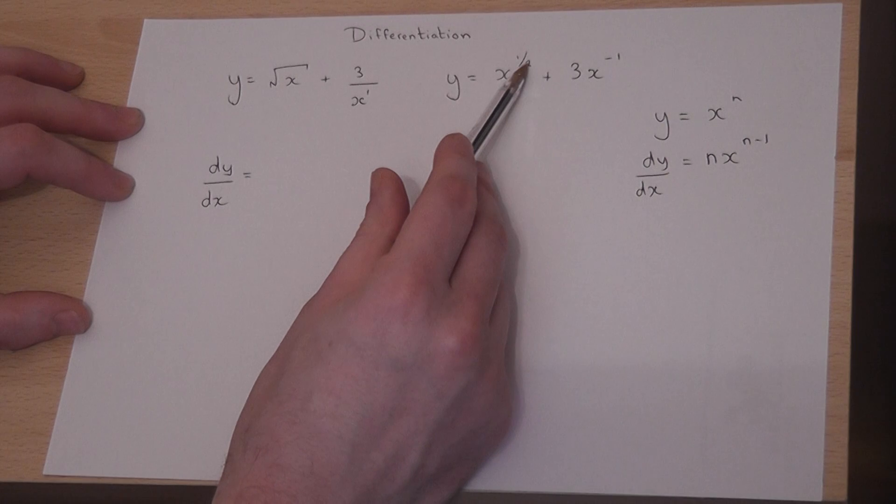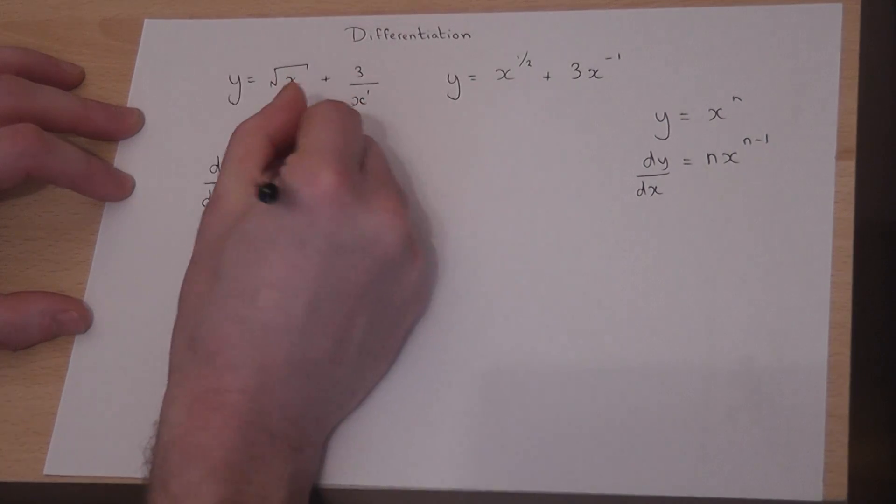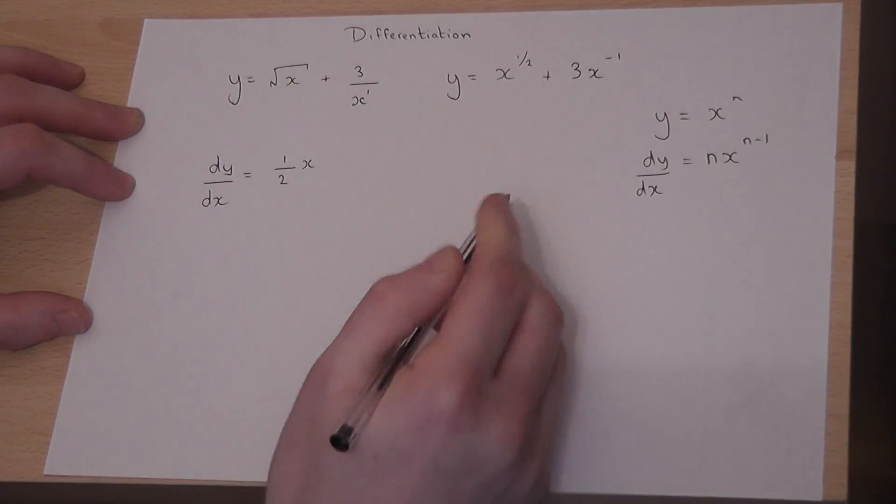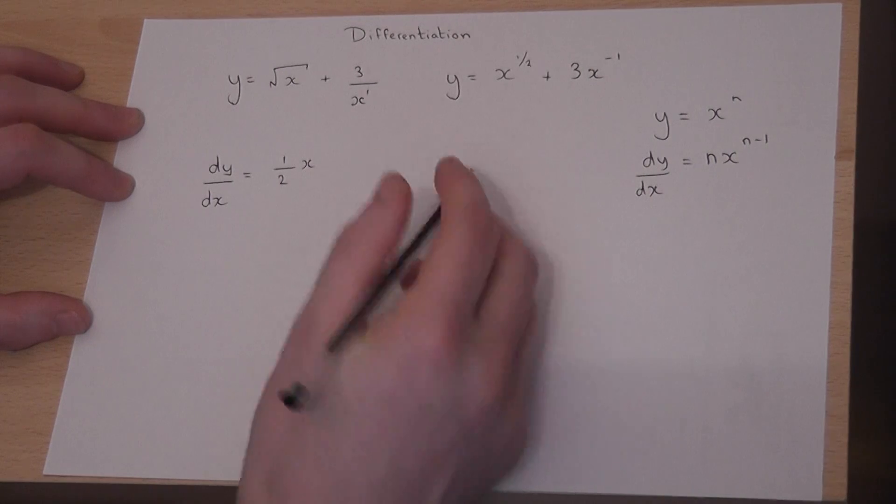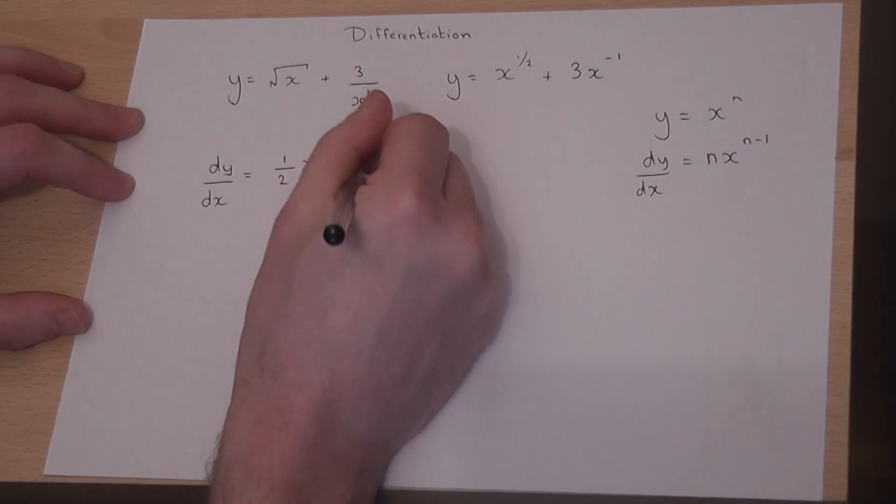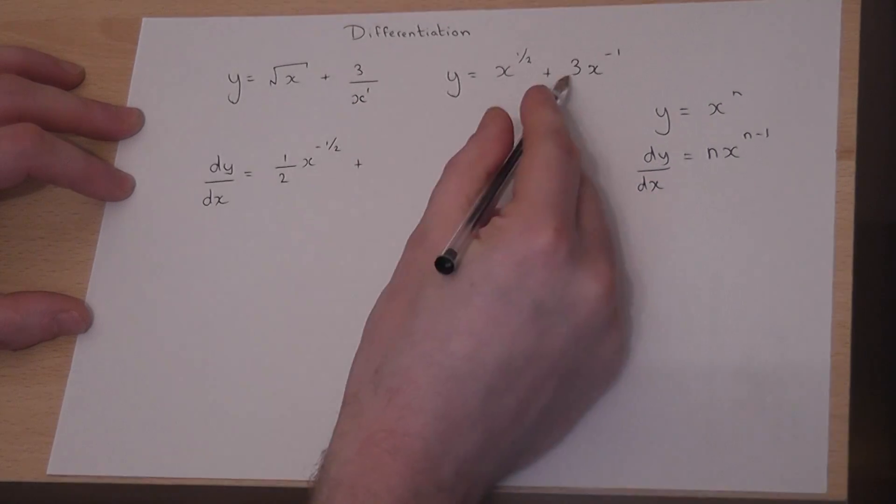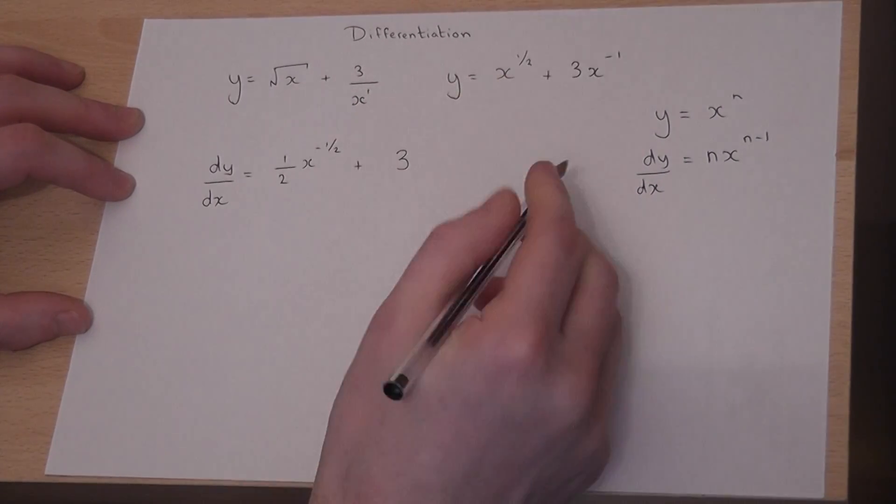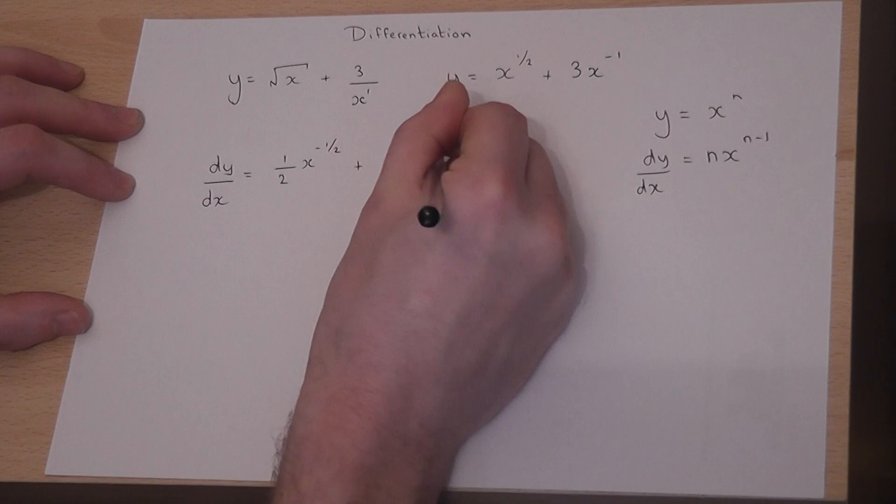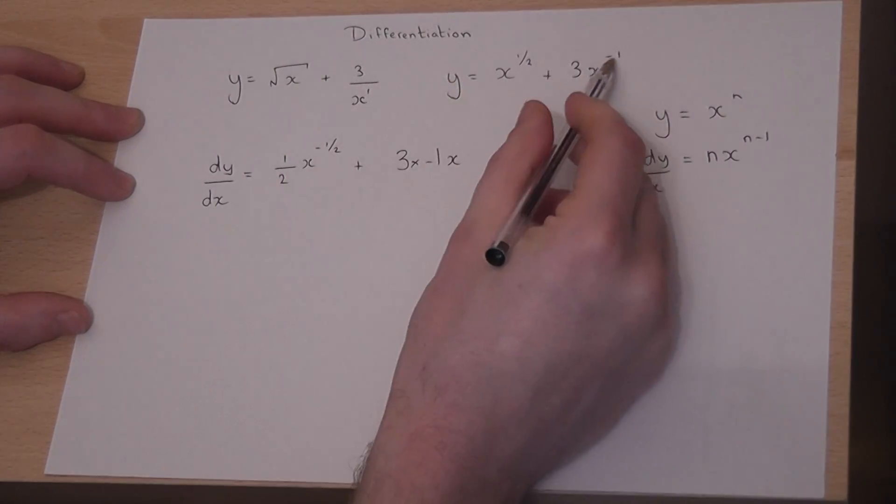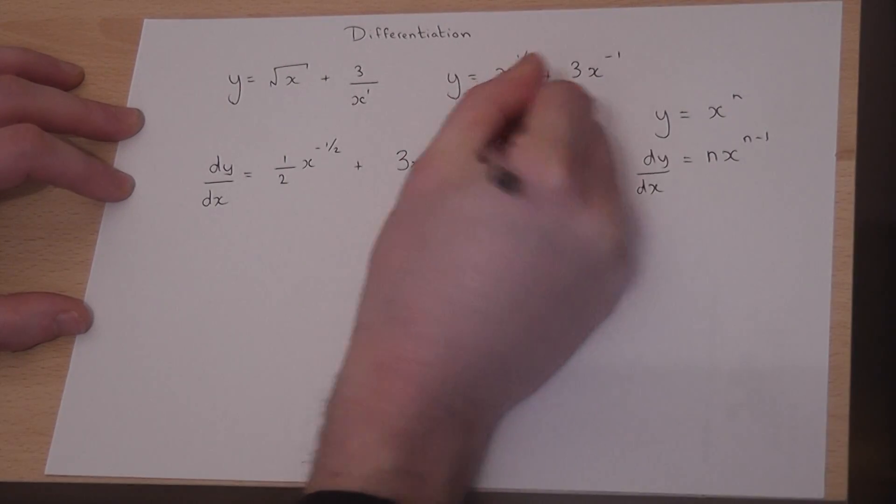So this is then applied to these two powers here. For the first term, we times by the half, and then take away 1 from the power. So a half take away 1 is minus a half. For the second term, we leave the 3 there. We times it by minus 1, x, take 1 from minus 1, minus 2.